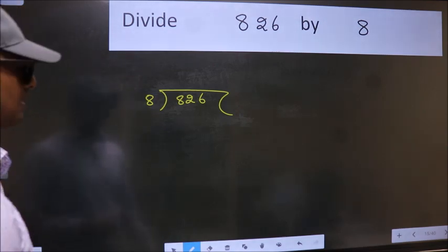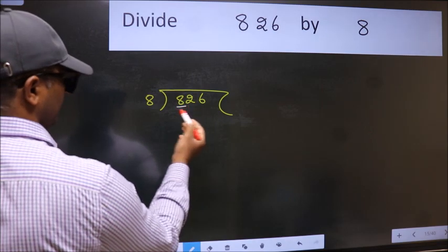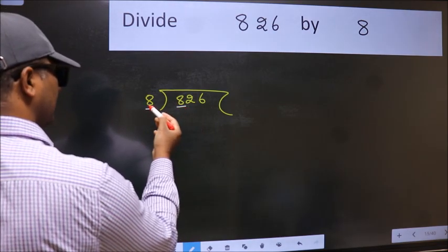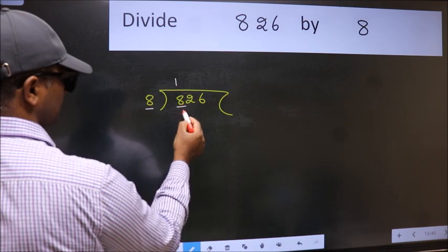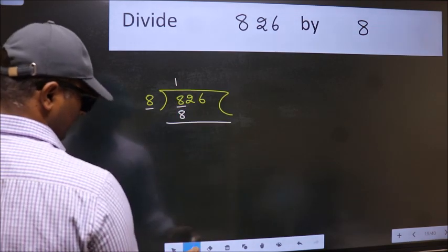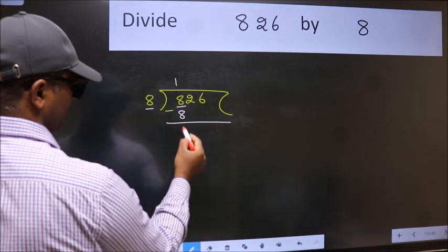Next, here we have 8 and here 8. When do we get 8 in the 8 table? 8 once 8. Now we should subtract. We get 0.